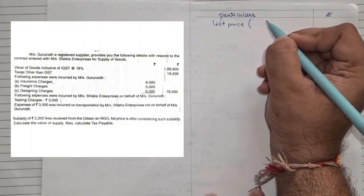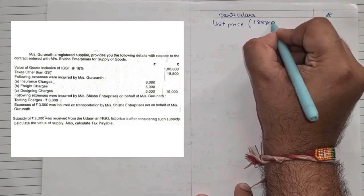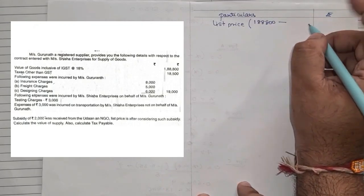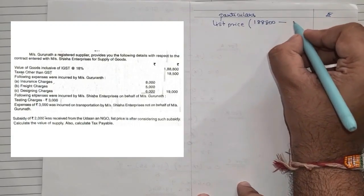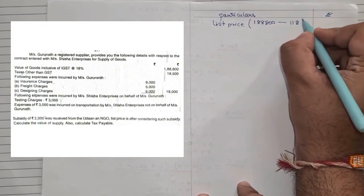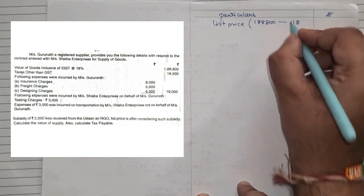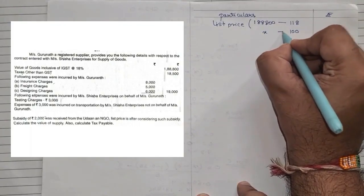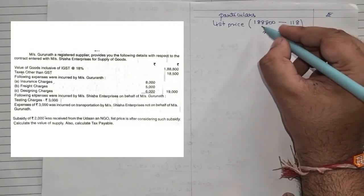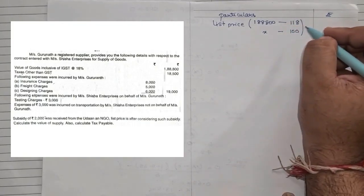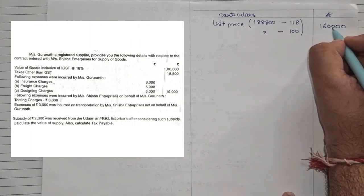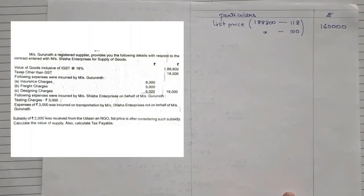The amount ₹1,88,800 is inclusive of IGST at 18%, meaning it represents 118% of the base value. We need to find the 100% value, i.e., the price exclusive of GST. Using cross-multiplication: ₹1,88,800 × 100 ÷ 118 = ₹1,60,000. So ₹1,60,000 is the list price exclusive of GST. Our sum always starts with this list price.